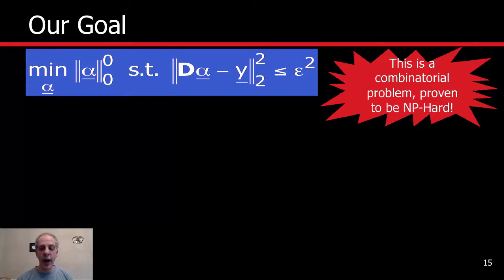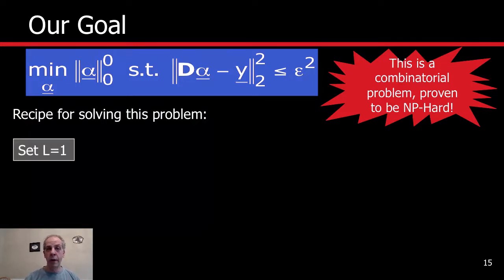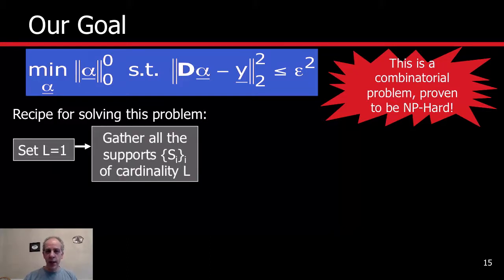This is a combinatorial problem and it's NP-hard — you cannot solve it as just posed in realistic time. The only way to solve it exactly is: start with L equal to 1, look for a signal with sparsity 1, and generate all possible supports. Because L equals 1, the support means only the first atom is active, or only the second, or only the third, and so on.